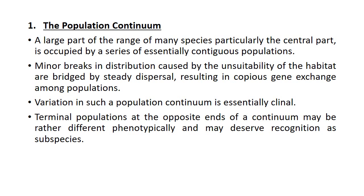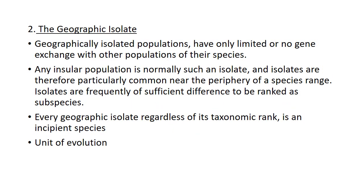The population continuum is a large area where many species' ranges overlap, and the central portion especially is where many populations share their borderlines. There are sometimes habitat breaks, but there may be steady dispersal resulting in gene exchange or gene flow among populations. Due to this, variations are clinal — that is, there is a gradual change in a character. At the opposite ends of the continuum there might be a drastic difference in characters, and these may be called subspecies. In mapping species and subspecies, we use an isophene — a line at right angles to the cline that connects points of equal expression of a variable.